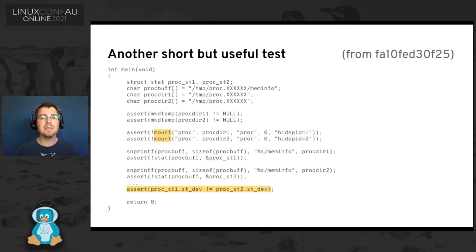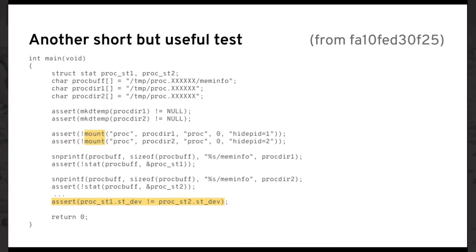Here's another small test — a little bigger, I didn't quite fit it on the slide — but this tests quite a major change to the way the kernel works. Prior to 5.8, you couldn't mount multiple instances of proc in the same pid namespace. In 5.8, they changed that so you can now mount multiple instances, and this is the test of that. My point is that this is about 20 lines of code and it tests quite a major change in a feature. Tests don't have to be big or involve multiple threads — they can be fairly small and still test something meaningful.